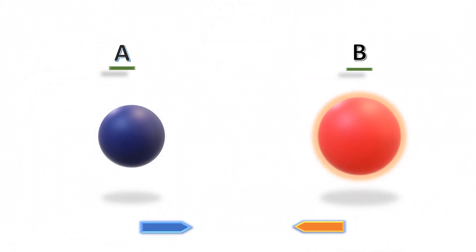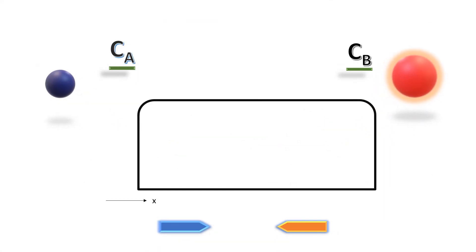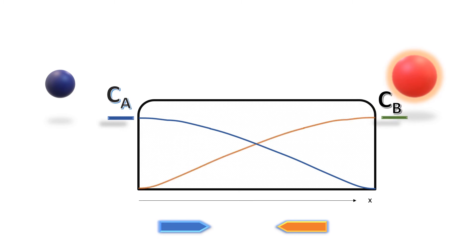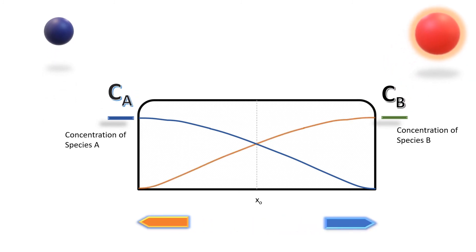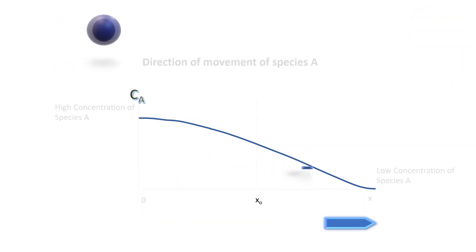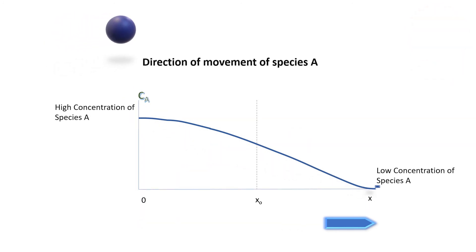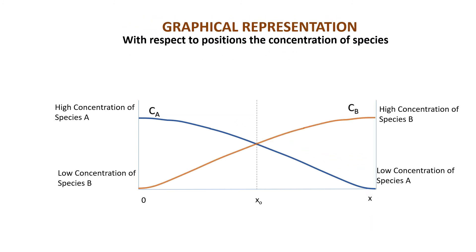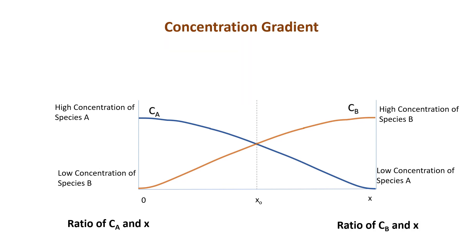Let's see the graphical representation, with the length of the container as the x-axis, and C_A the concentration of species A, and C_B for species B on the y-axis. By observing the graph, the slope of the smooth curve gives the ratio of the concentrations and distance of movement of the species — this is called the concentration gradient. The rate of mass transfer is directly proportional to this concentration gradient.